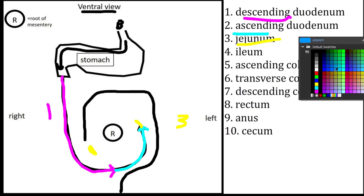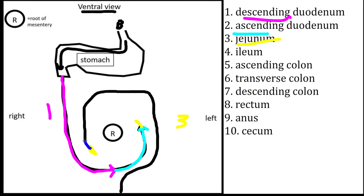The next structure we'll draw will be the ileum. The ileum is a small piece — the last distal piece of the small intestine — and it heads cranially to the right of the root of the mesentery.